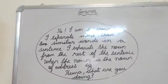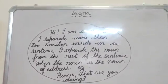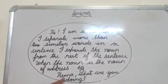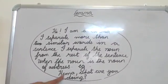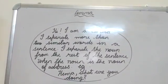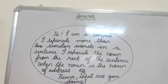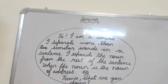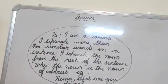When the noun is the noun of address — for example, 'Hema, what are you doing?' — Hema is a noun in this sentence. After Hema, we put a comma. Someone is addressing Hema.